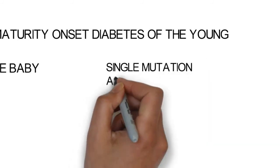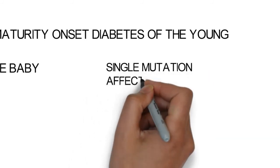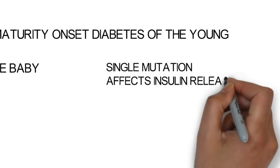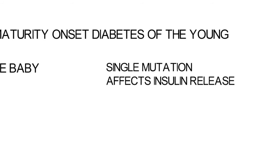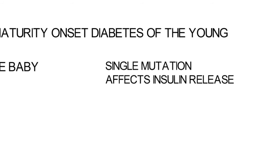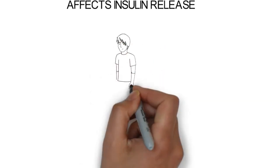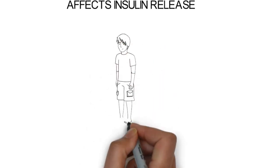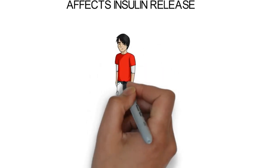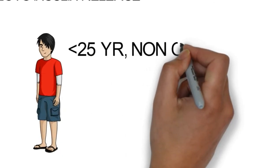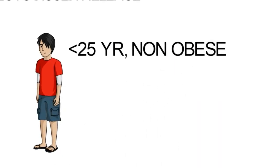Maturity onset diabetes of the young (MODY) is a type of diabetes caused by a single genetic mutation which interferes with the release of insulin from the pancreas. These individuals are usually less than 25 years of age, are non-obese, and have impaired glucose control because of insufficient release of insulin from the pancreas.